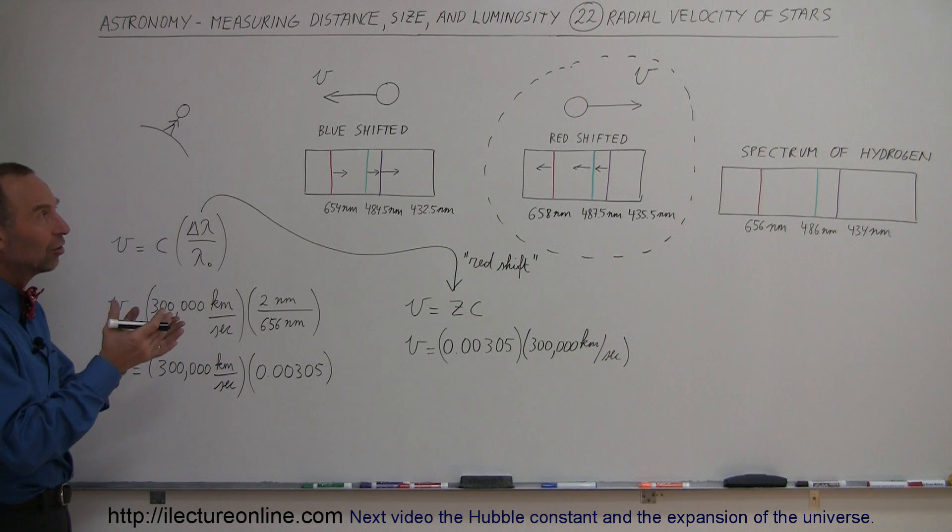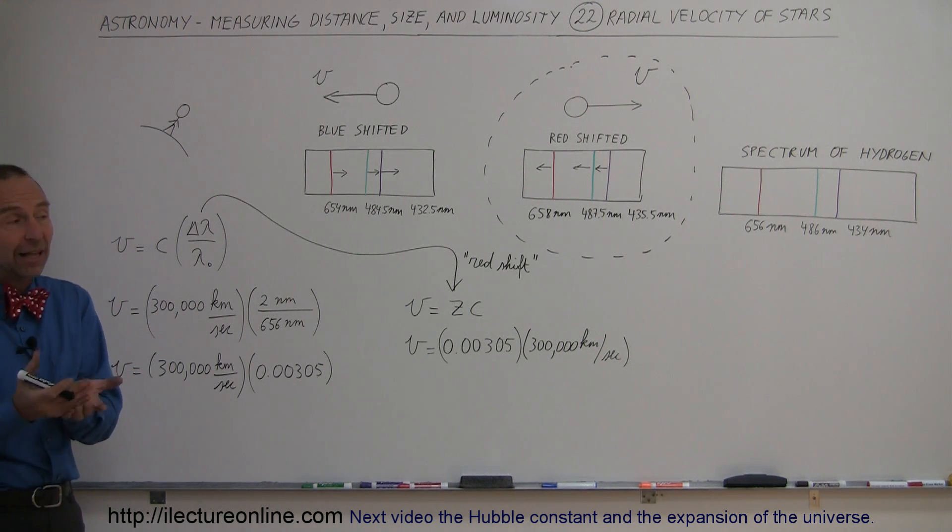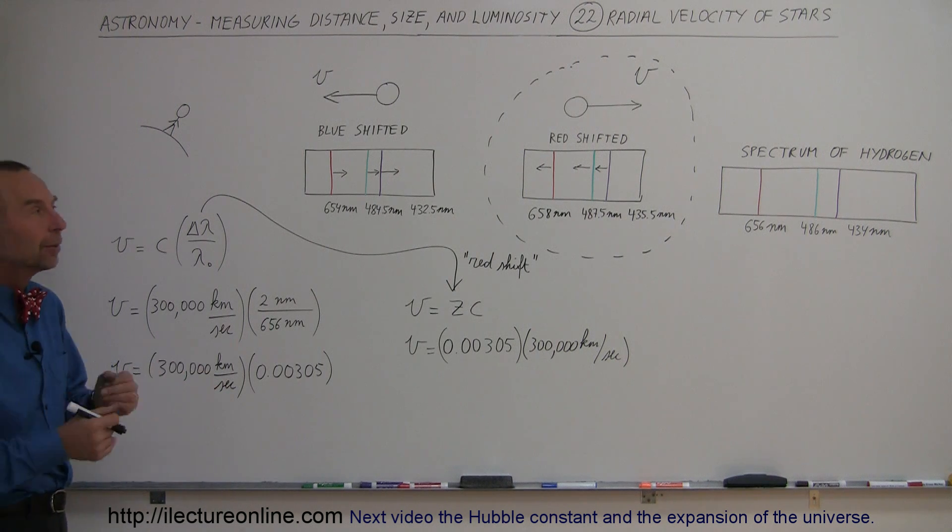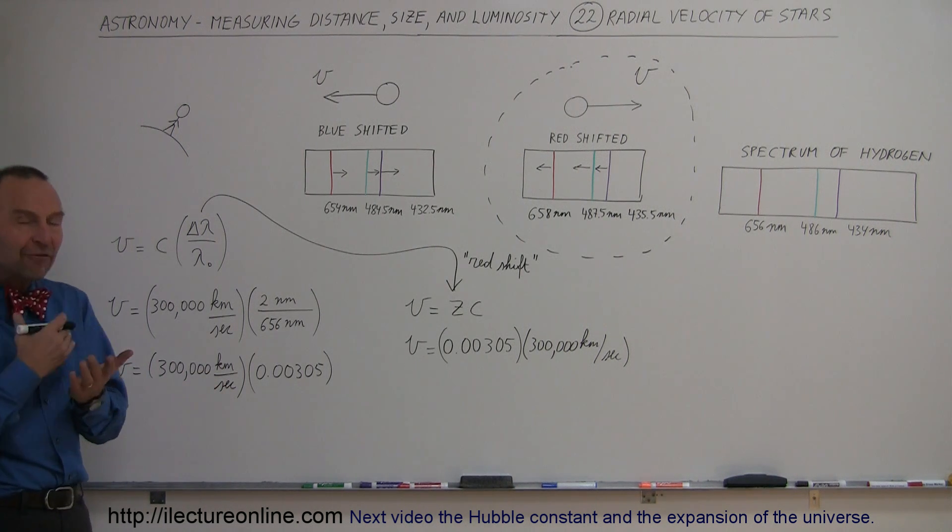So let's understand this concept which is the radial velocity of stars and in that aspect the radial velocity of anything, nebulas, galaxies, you name it. So how do we know how fast things are traveling through space?